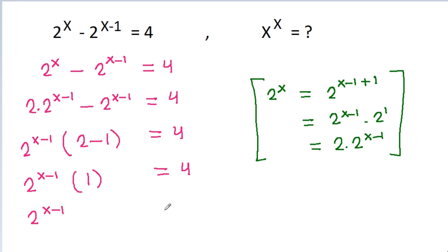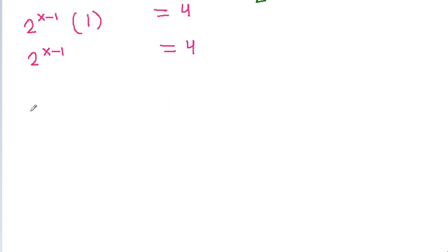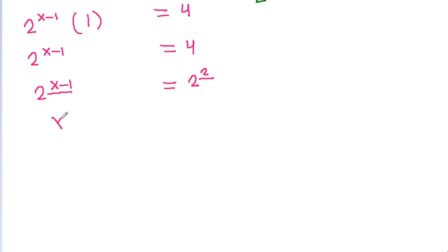So 2 power x minus 1 is equal to 4, and 4 is 2 square. Now we can compare powers of 2, so we will get x minus 1 is equal to 2, and x will be equal to 2 plus 1, which is 3.